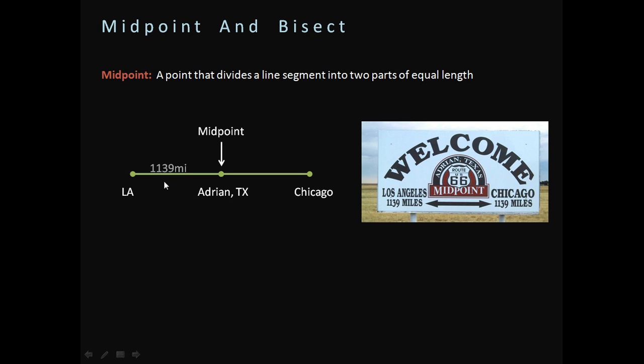So from LA to Adrian is the same length as it is from Adrian to Chicago. So that's what a midpoint is. It divides the line directly in half. Now, let's take a look at what this would look like as a math problem that you might see next class.